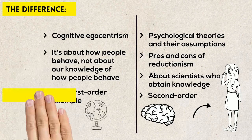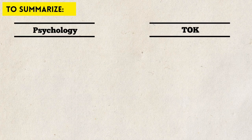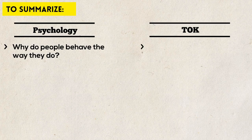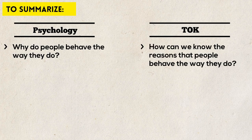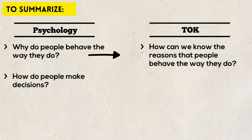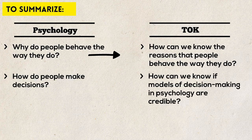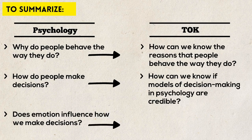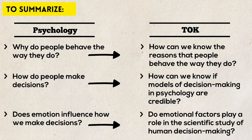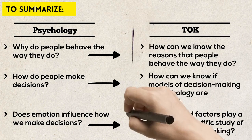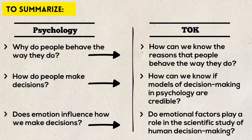To summarize, here is a list of common questions investigated in psychology, along with their non-subject-specific TOK versions. Psychology: 'Why do people behave the way they do?' TOK: 'How can we know the reasons that people behave the way they do? How can we be sure that theories explaining human behavior are correct?' Psychology: 'How do people make decisions?' TOK: 'How can we know if models of decision-making in psychology are credible?' Psychology: 'Does emotion influence how we make decisions?' TOK: 'Do emotional factors play any role in the scientific investigation of human decision-making?' The line between psychology and TOK is very thin sometimes — barely visible. However, it's important to feel the difference, to stay focused on knowledge concepts and stay away from subject-specific arguments.